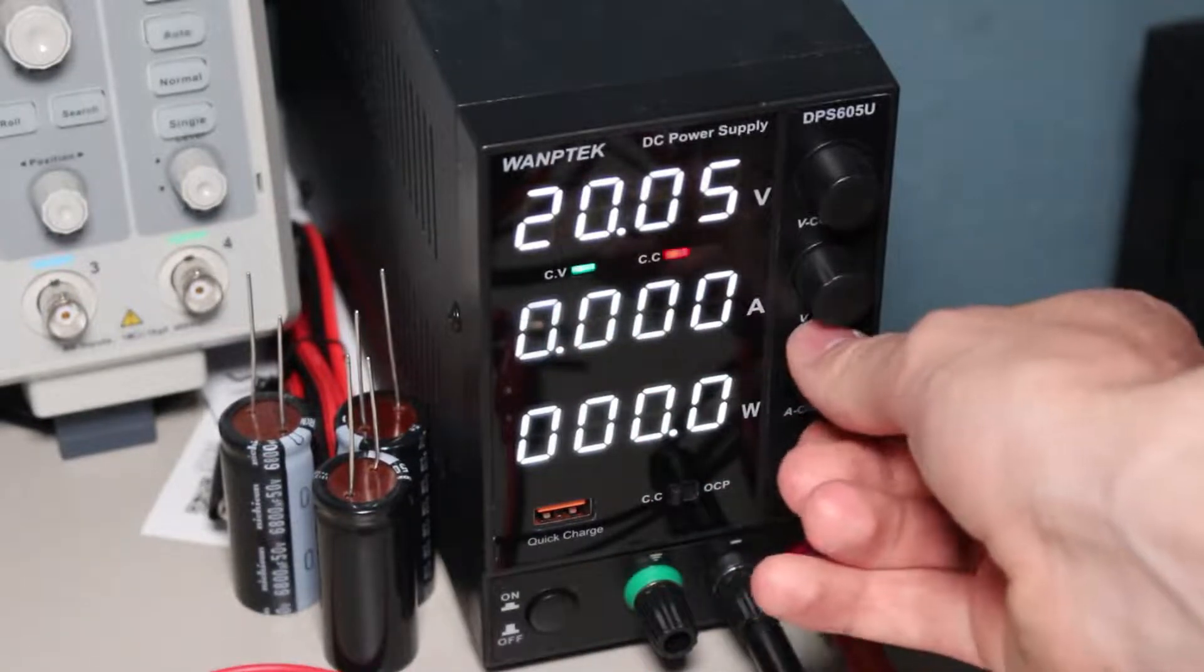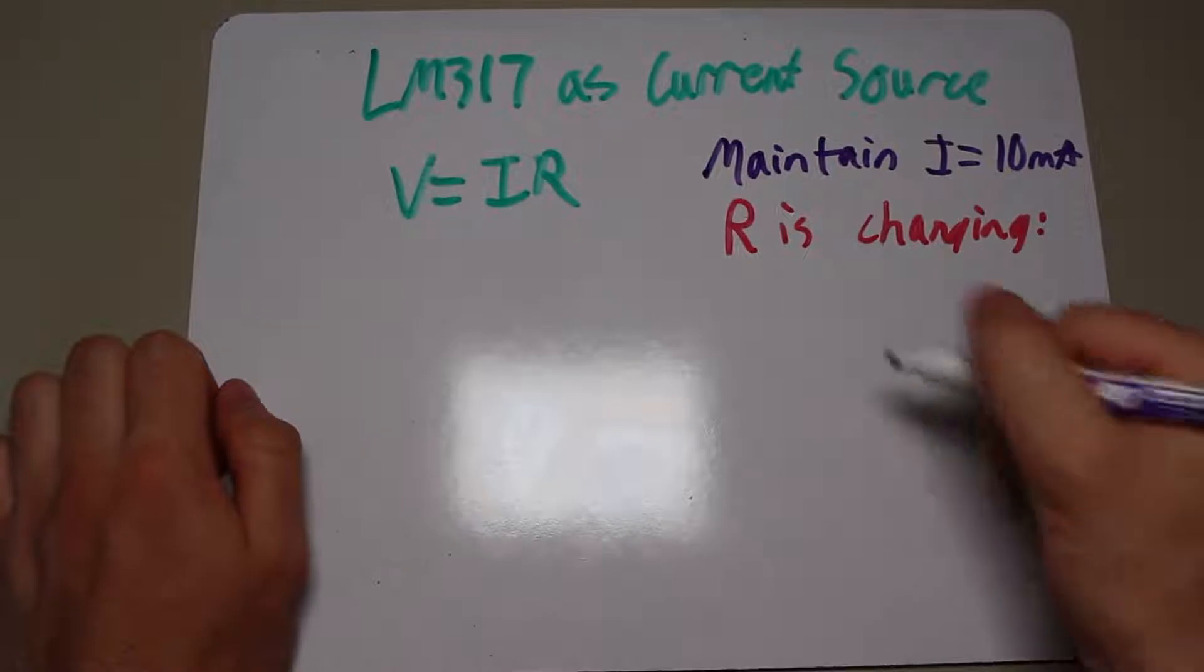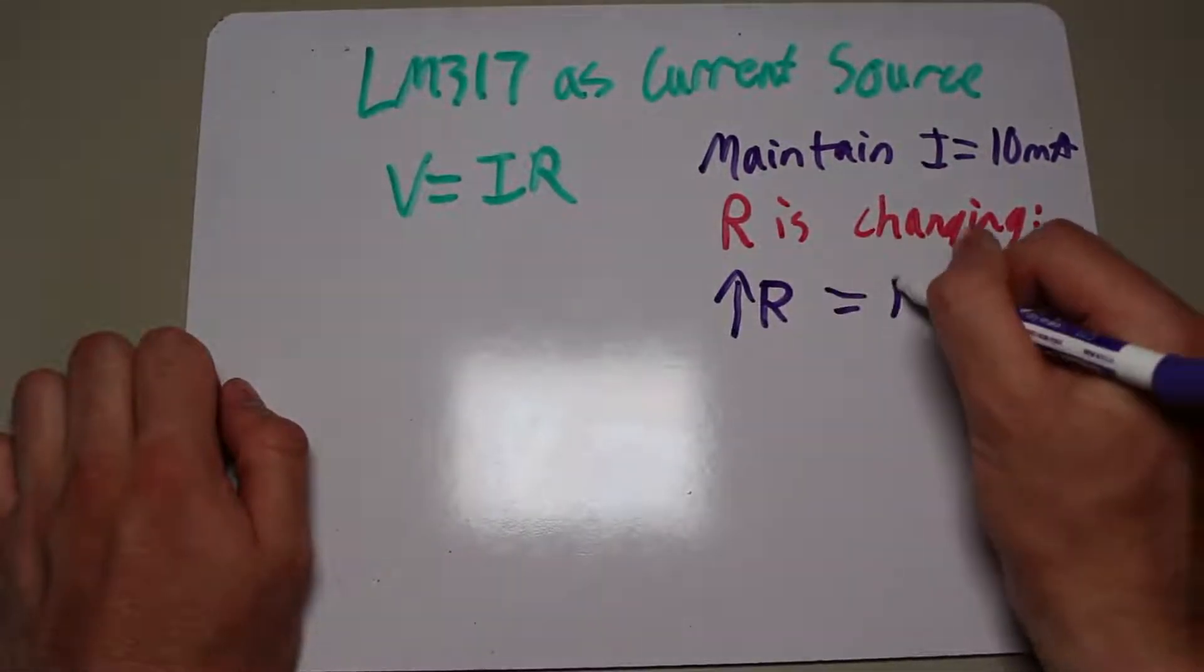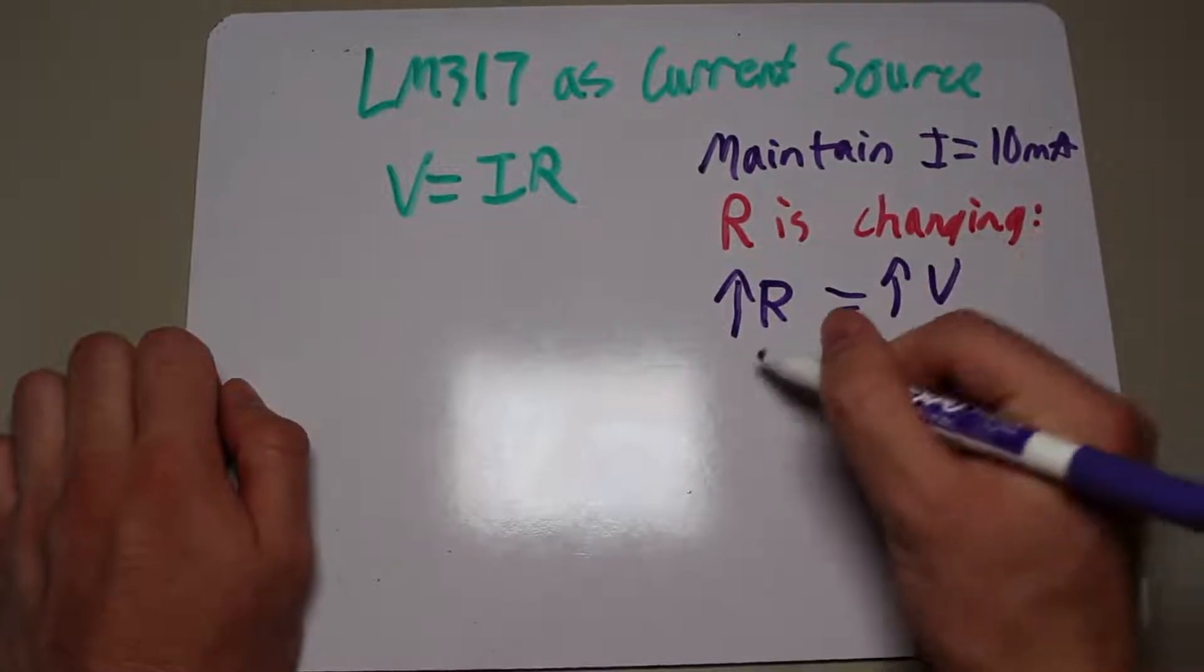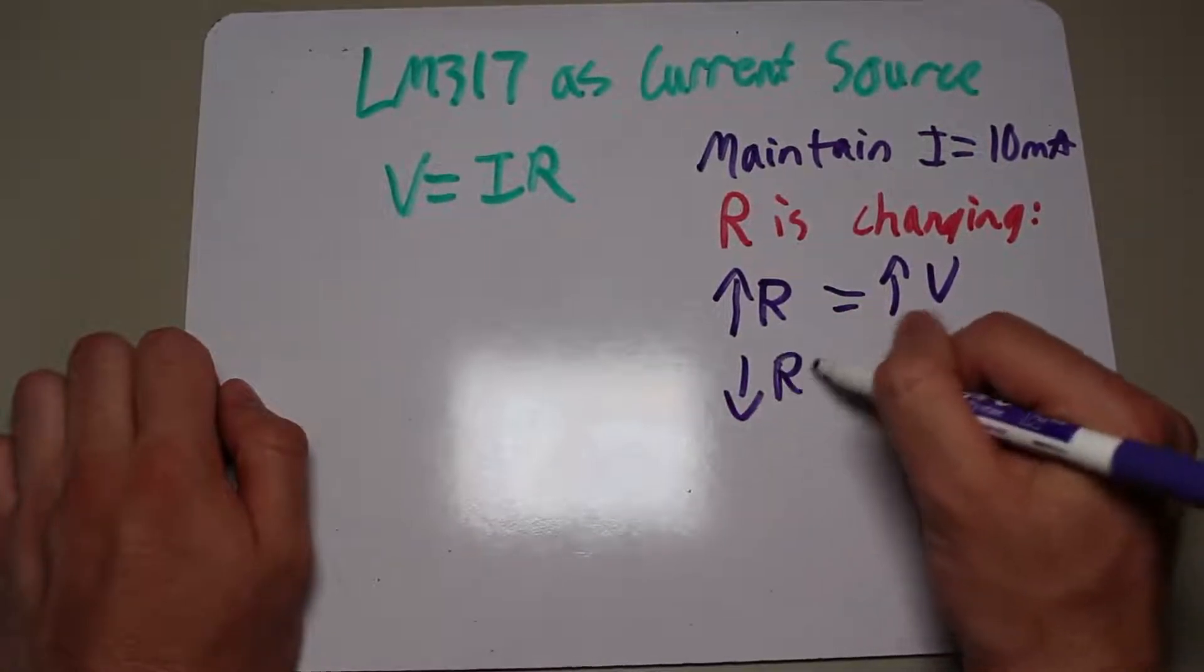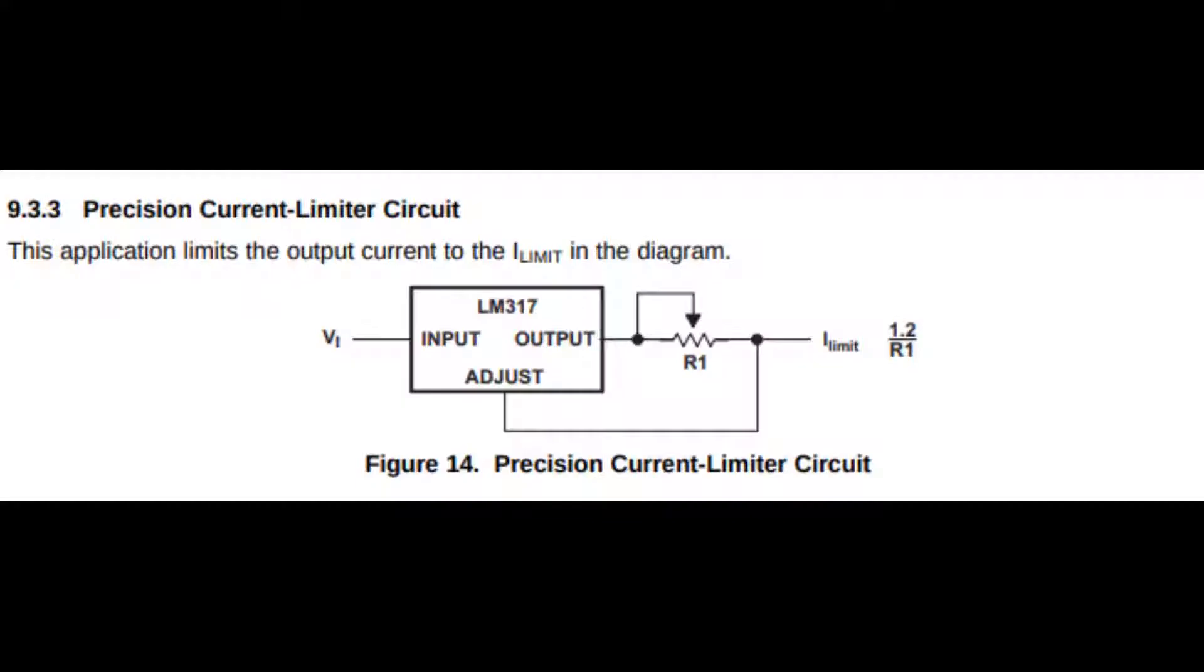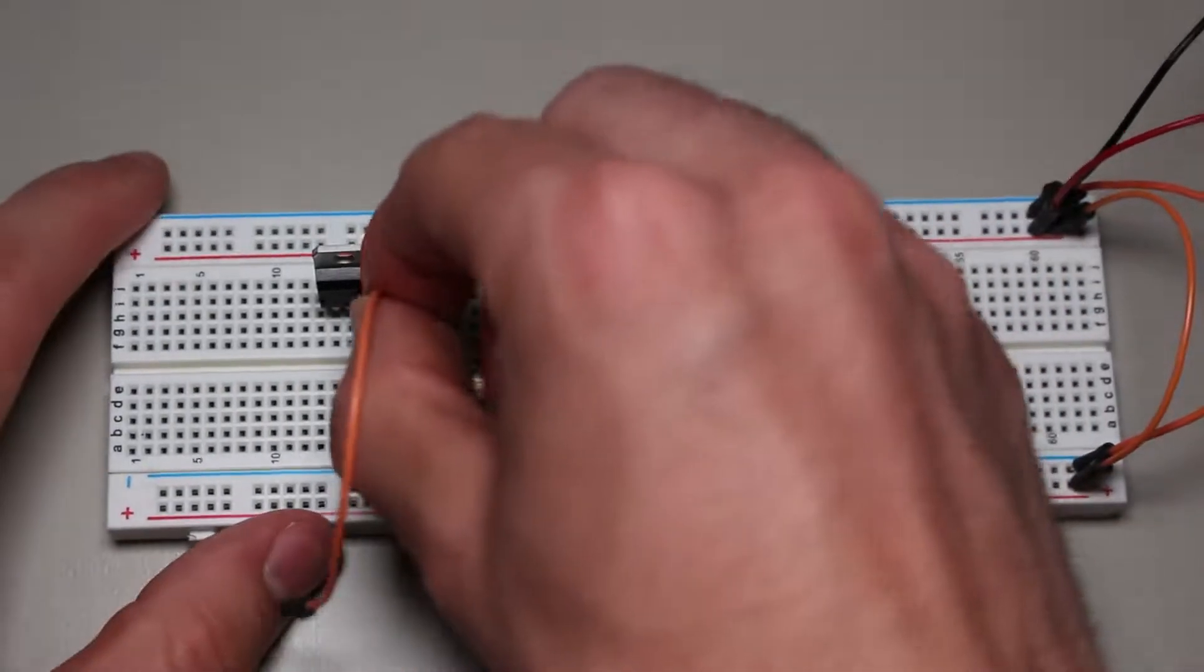By manipulating Ohm's law, we can turn the LM317 into a current source. Remember that with a higher voltage comes a higher current, and vice versa. So, if we modify the output voltage so as to always output fixed current, we will have made a current source. The datasheet recommends we do this by putting a resistor in series with the output, and then connecting the other side to the adjust pin.